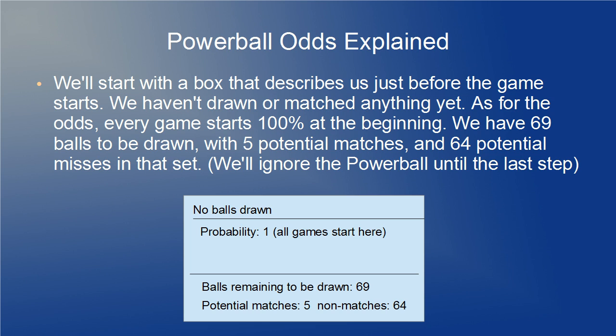We begin by making a box that describes the situation just before the game starts. We haven't drawn or matched anything yet. As for the odds, every game starts with 100% probability at the beginning. As for the next draw, we have 69 balls to be drawn with 5 potential matches and 64 potential misses in that set, and we'll ignore the Powerball until the last step.